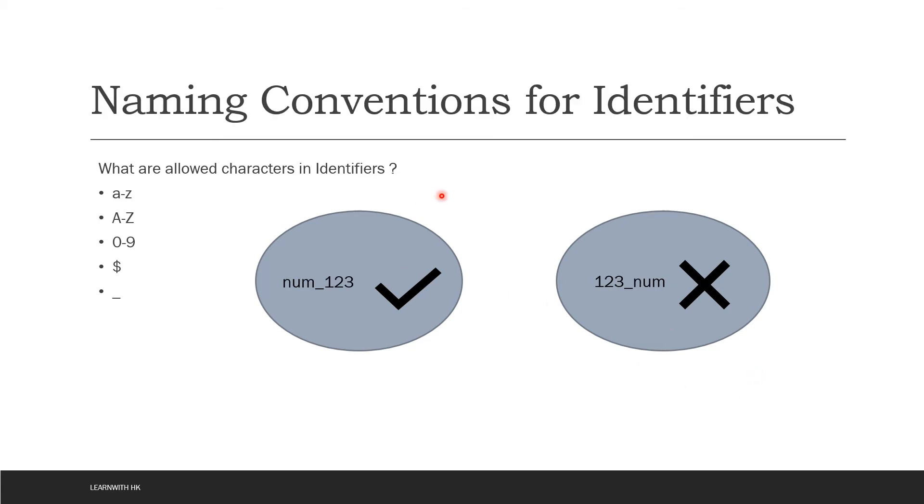As I said, there are some naming conventions. Although 1, 2, 3, 4, underscore, and num are allowed characters, you are not supposed to start your identifier name with a number. So that's why it is also not allowed.